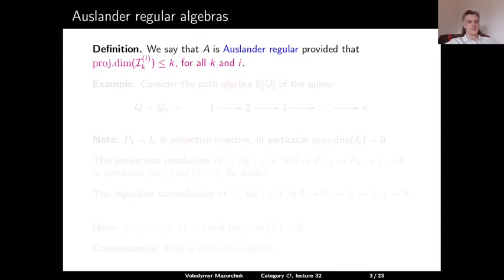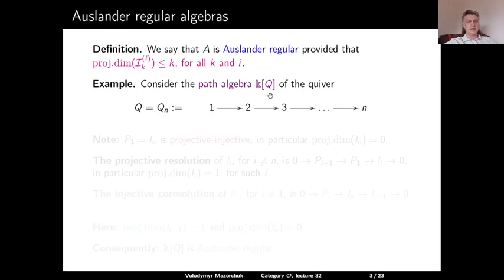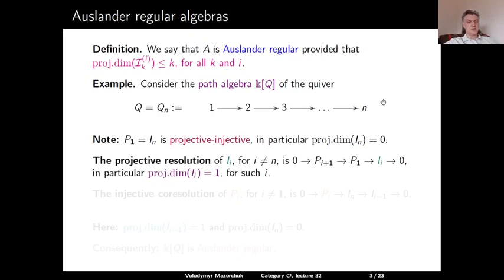For example, consider the path algebra of the following Dynkin quiver — the type A_N quiver oriented uniformly. Note that the projective module P_1 coincides with the injective module I_N; in particular, it is projective-injective. The projective resolution of the injective module I_i, when i is not equal to N, looks as follows. The projective cover of I_i is P_1, and the kernel of the surjection map is P_{i+1}. So in particular, the projective dimension of I_i is 1, for each i different from N.